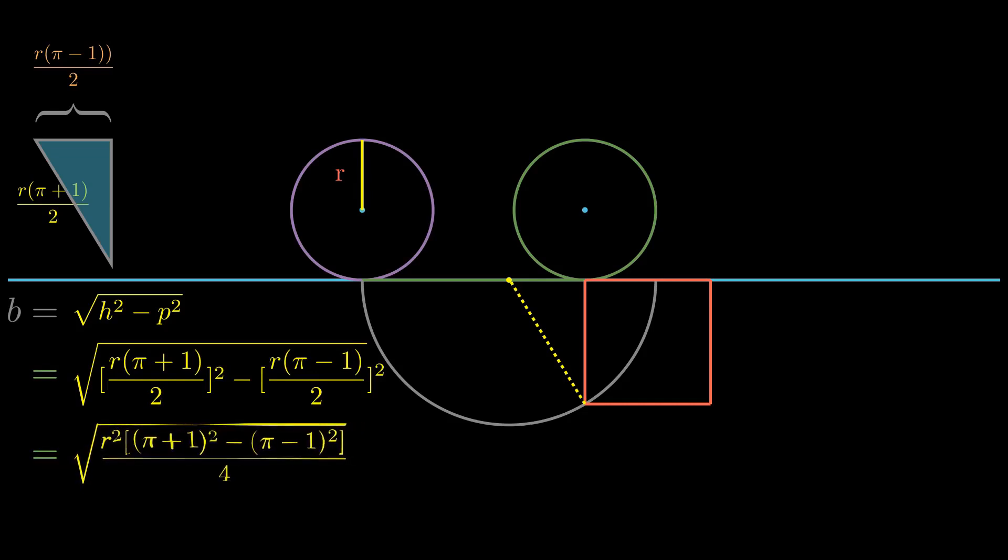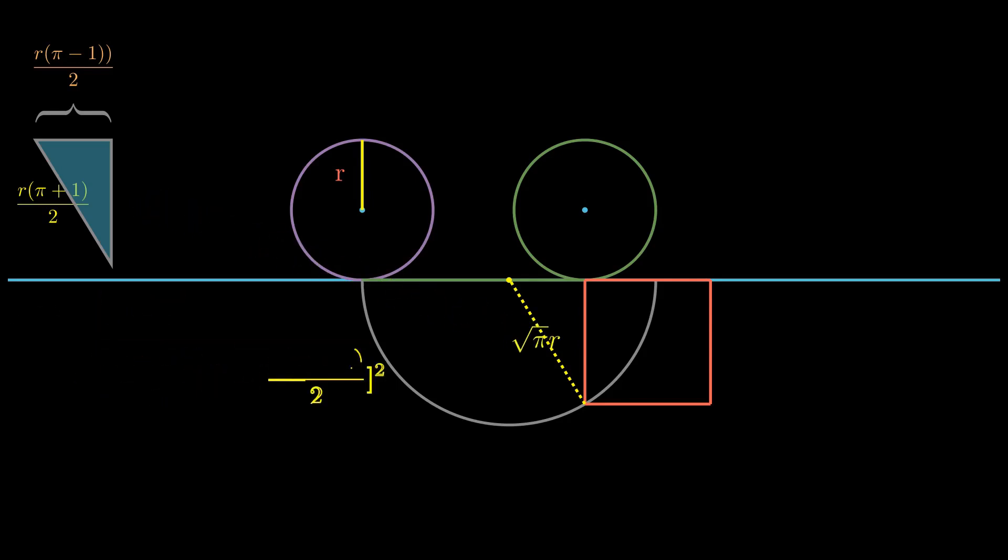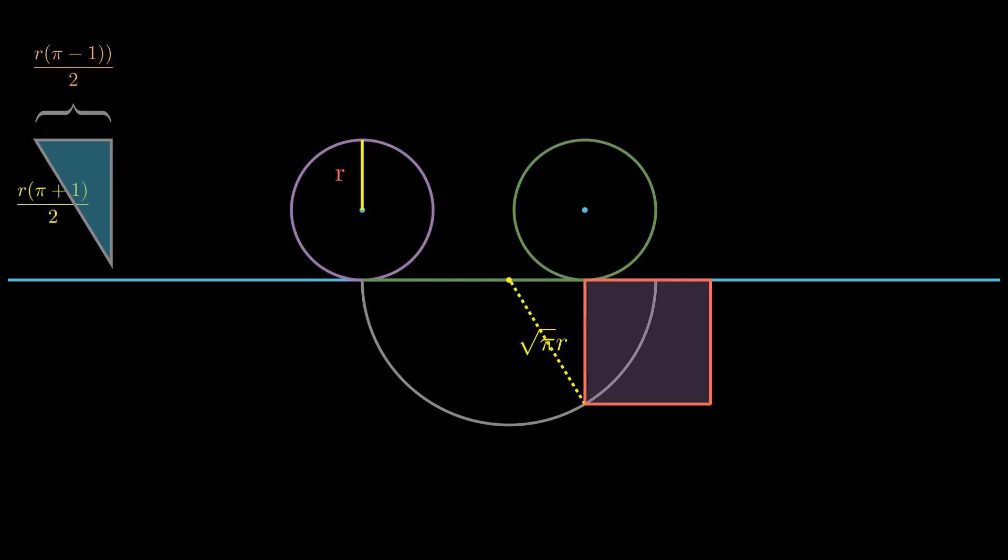And Pythagoras with his ingenious theorem that I can't help fall in love with every time I see it gives us the third side of the triangle. And if you have got a particularly keen eye, you must have seen how the third side of the triangle that we just found is the side of the square as well. The area of the square then is its side squared, which is pi r squared for our instance. Amazing!